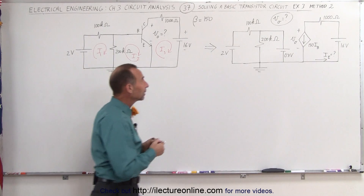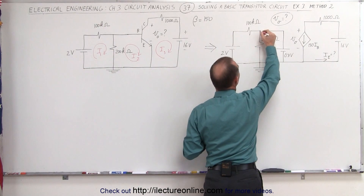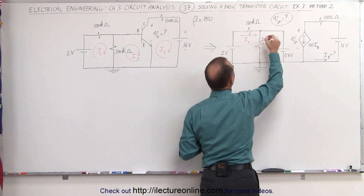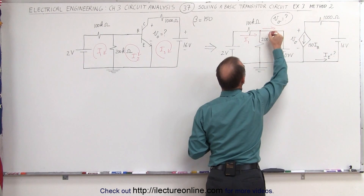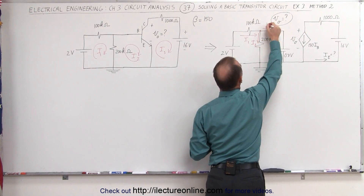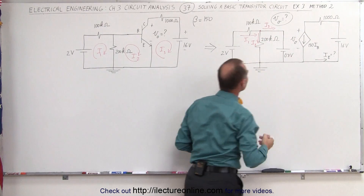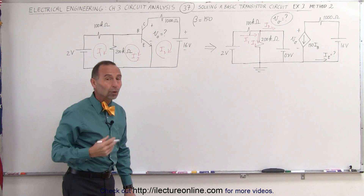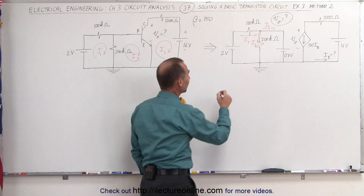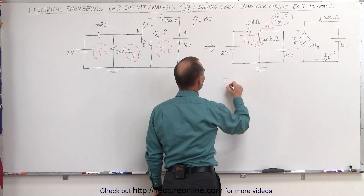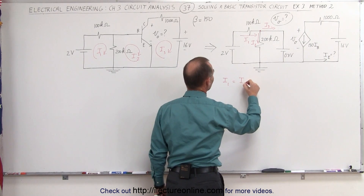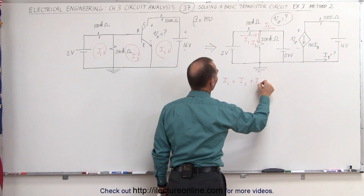What I need to do is pick a node, and I'll pick this node right here. I have a current entering the node — let's call this I1 — a current leaving the node here, and a current leaving the node here. Let's call this current I2, let's call this current I3. Using node analysis, all the currents entering must equal all the currents leaving, which means that I1, the current entering, must equal the sum of the two currents leaving: I2 plus I3.